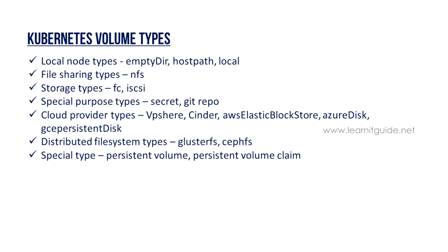If you look at NFS, FC, and iSCSI, these are used across multiple nodes and are mostly shared volumes. If you have five worker nodes and you don't know which node the pod is running on, in that case you can use shared volumes that are accessible across all Kubernetes worker nodes.